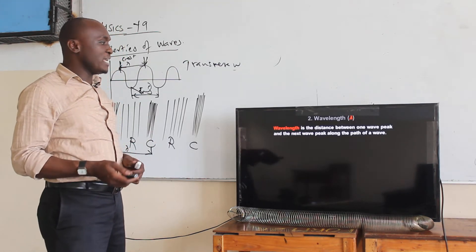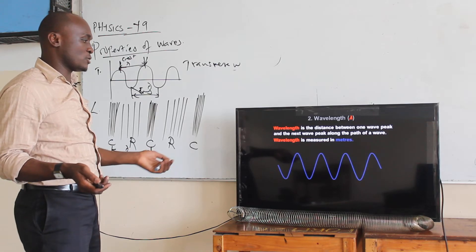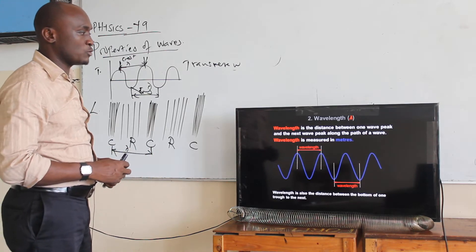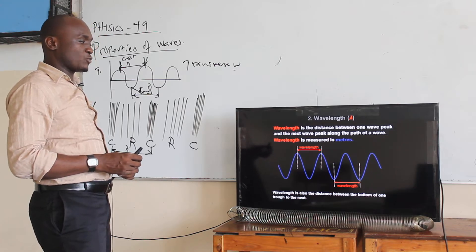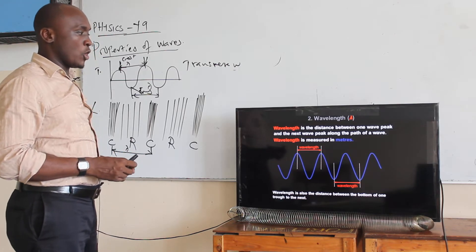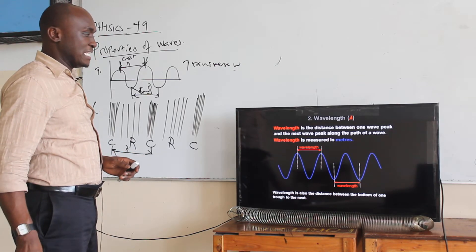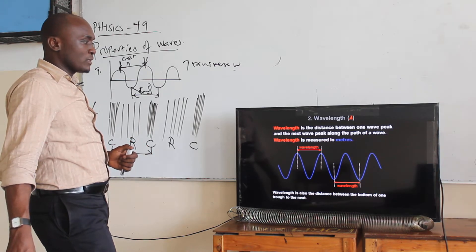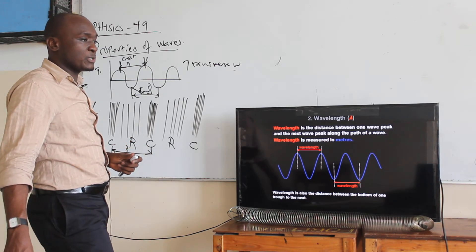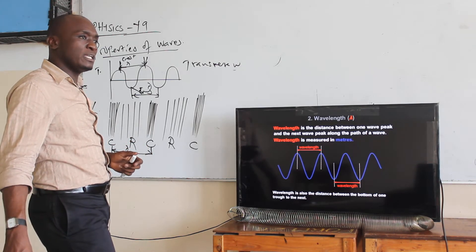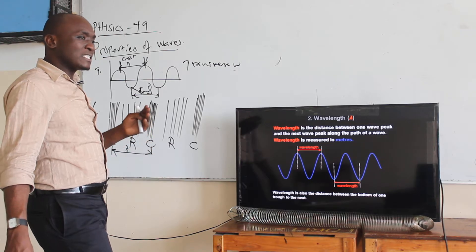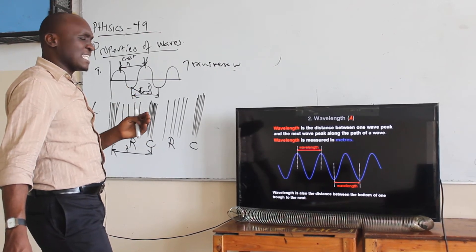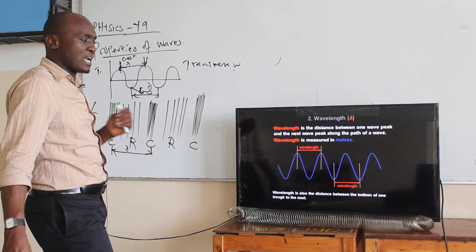The wavelength is the distance between one wave peak and the next wave peak along the path of a wave. The wavelength is measured in meters. We are saying the wavelength is the distance between two successive peaks, two successive crests, or two successive troughs.